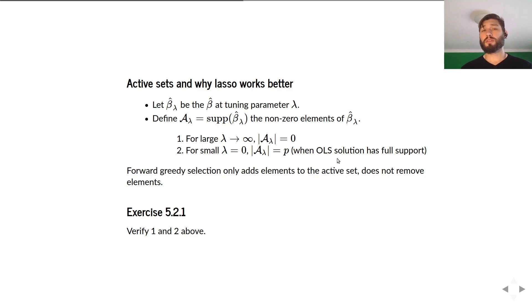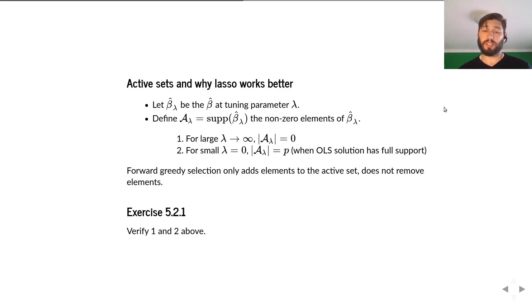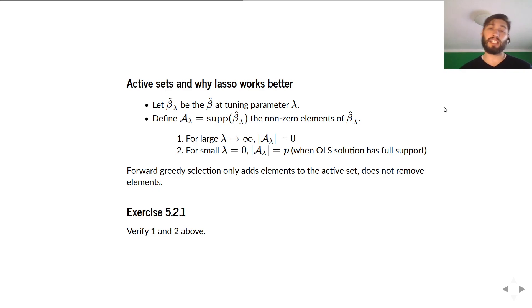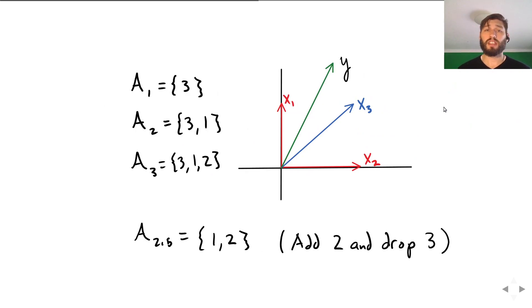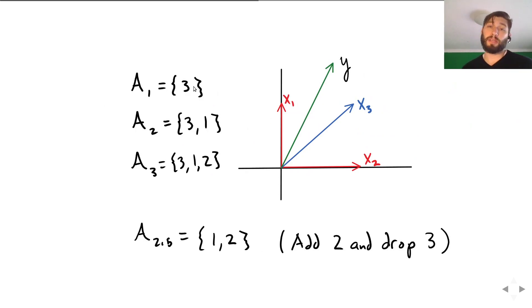For greedy selection, we just add elements to the active set — that's the forward stepwise method we introduced to attempt to solve the NP-hard subset selection problem. Let's see why that can go wrong and why the lasso might be a superior alternative.